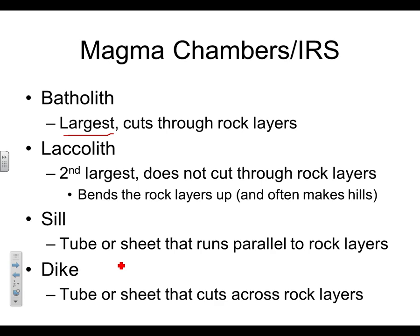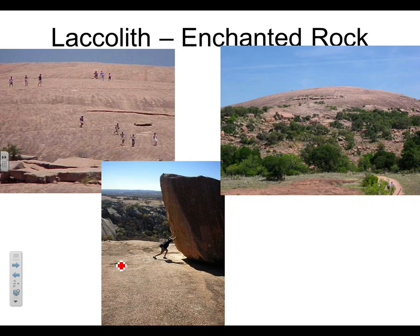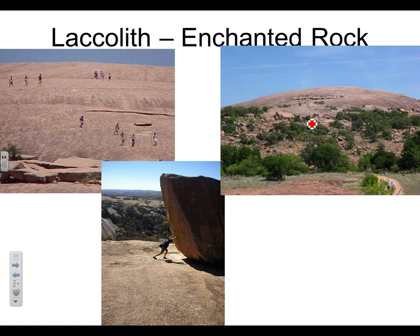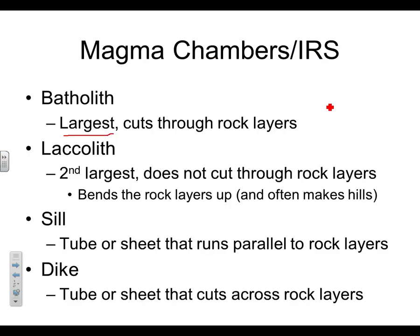I'll show you a picture of one of the best-known laccoliths in the world — it's actually here in Texas. This is Enchanted Rock. It is basically a big pink piece of granite, south of Dallas. You can climb up the side and up to the top — you can see people look like little ants up there. It used to be covered in rock layers and used to be magma, then it cooled and became this laccolith. The rock layers have eroded away, and now this big solid piece of granite is just there on the surface.